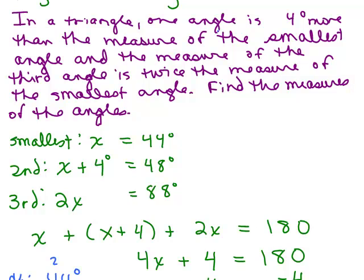It says in a triangle, one angle is 4 degrees more than the measure of the smallest angle. You look at your angles here. Is it true that one angle is 4 degrees more than the smallest? Well yeah, that 48 degrees is 4 more than the smallest. Is it also true that the third angle is twice as big as the smallest angle? You look at it, 88, yeah that's twice as big.